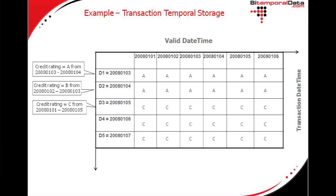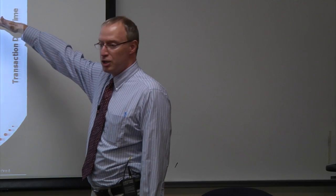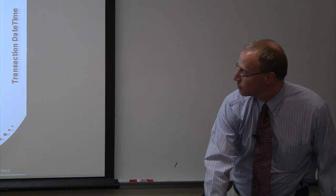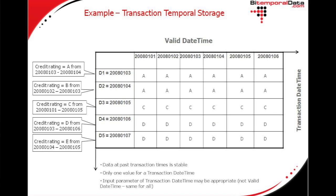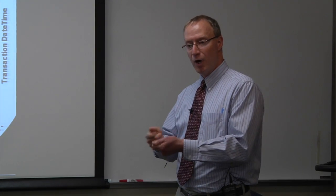For event C, that row turns to C for all valid date-times. Then D and then E. You may notice about transaction temporal storage — similar to bitemporal storage — the previous transaction rows are stable; they don't change with subsequent events. So transaction temporal data is stable for past transaction times. And since there's only one value for a transaction date-time, an input parameter of transaction date-time may be appropriate, but it would not be appropriate to query transaction temporal data with a valid date-time stamp.